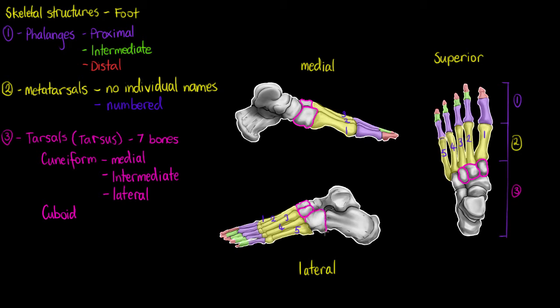Our next tarsal bone is the cuboid. You can see the cuboid, a large tarsal bone from the lateral and from our superior. Once again we won't see it on the medial.